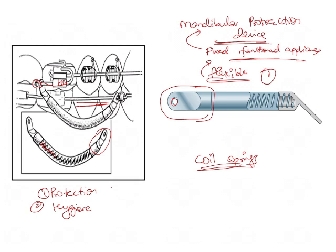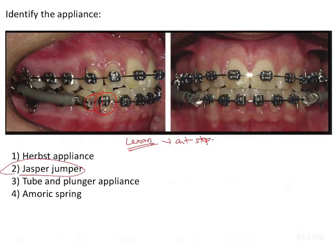To summarize, the characteristic features of the Jasper Jumper are: first, it is flexible, consisting of open coil springs which bring about mandibular protraction; second, the plastic covering; and third, the Legs-in bead. The posterior part of the force module is held inside the headgear tube slot.